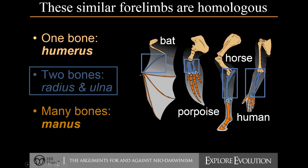For example, a bat wing, the flipper on a porpoise or dolphin or whale, the leg of a horse, the arm of a human. If you look at the bone structure of those, we see a similar pattern where the upper arm or limb has one bone — the humerus — and then that divides into the forearm, which is split into two bones, the radius and the ulna. And then finally, the end of that limb or the hand and wrist structure is many bones. So that common pattern of one to two to many is seen in all of these different vertebrate animals.